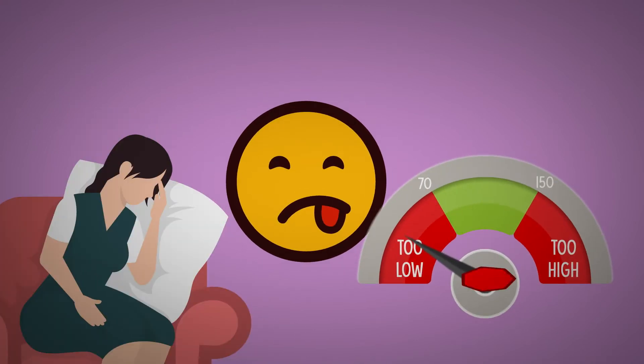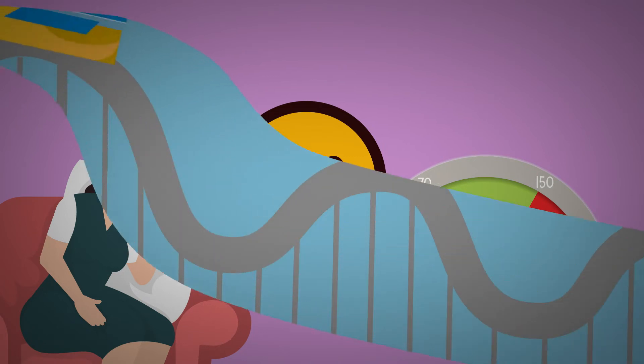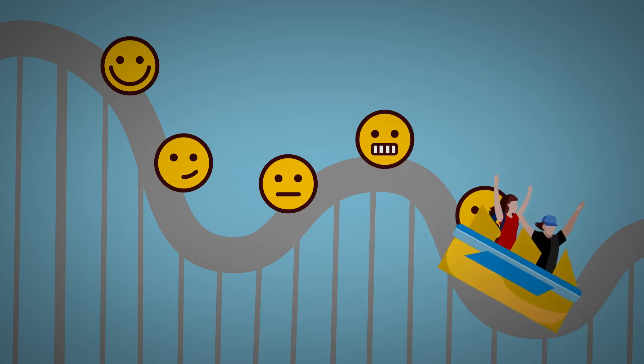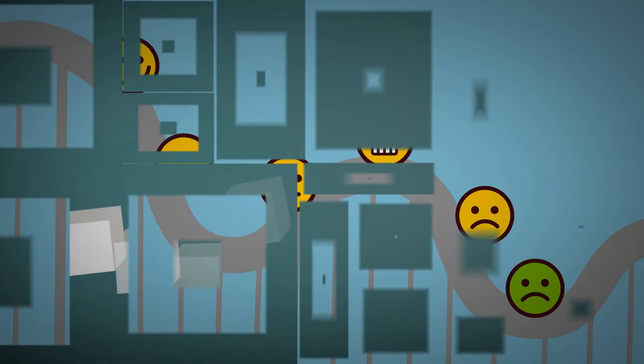Once your blood sugar levels drop, that's when the crash comes. Too much sugar creates a roller coaster of highs and lows that ultimately leave you feeling more tired and prone to mood swings.